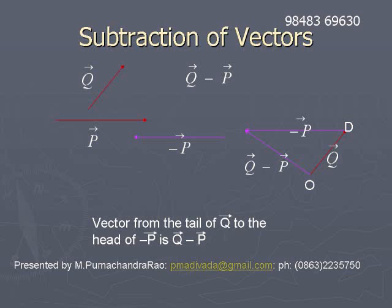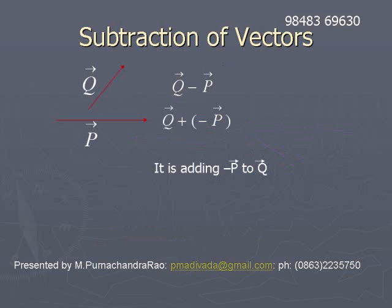The vector from O to the head of minus p̄ gives the q̄ minus p̄ vector. This is how we construct q̄ minus p̄ — we add minus p̄ to q̄, then we will get q̄ minus p̄.